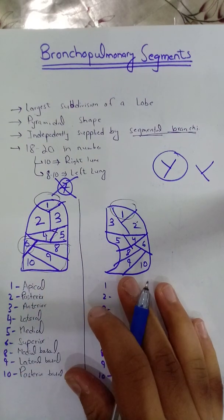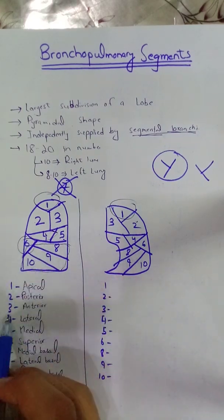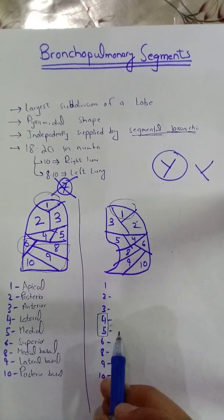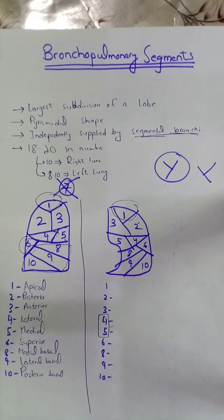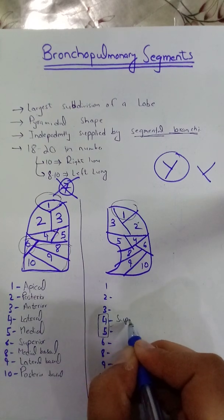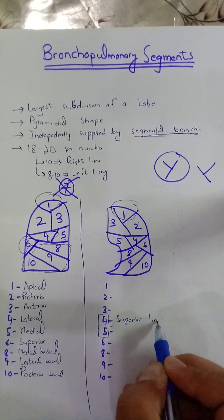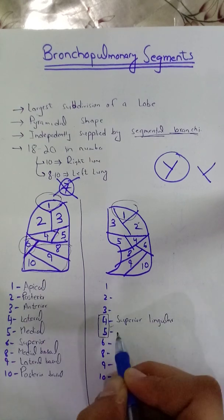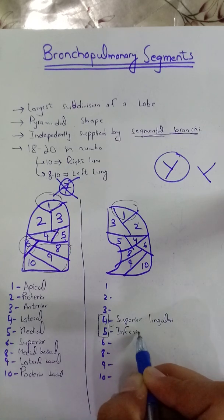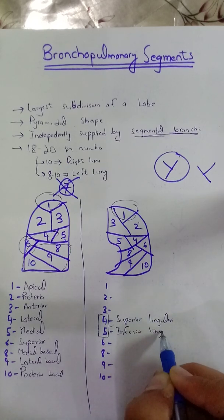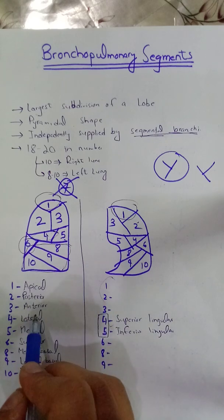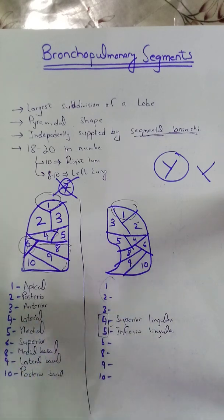On this side, the left lung, all these are the same except number 4 and 5. In 4 and 5, these will be superior lingual and inferior lingual respectively. All the others are the same.